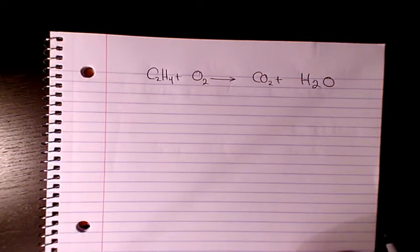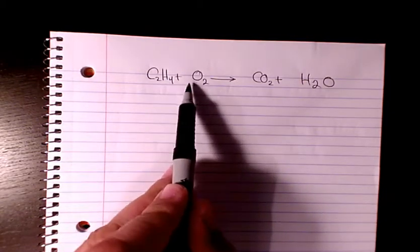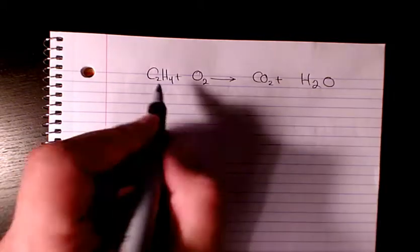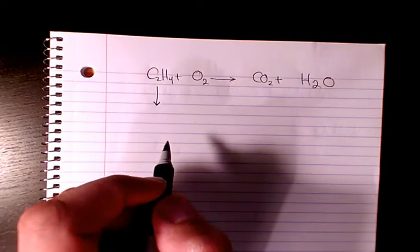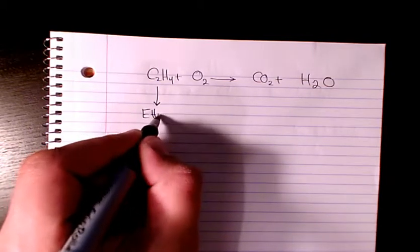What's up guys, this is Mansi. Welcome to my channel. In this video I want to show you the chemical equation of C2H4 plus O2 gives CO2 plus H2O. So that's basically the combustion or oxidation or burning of ethylene.